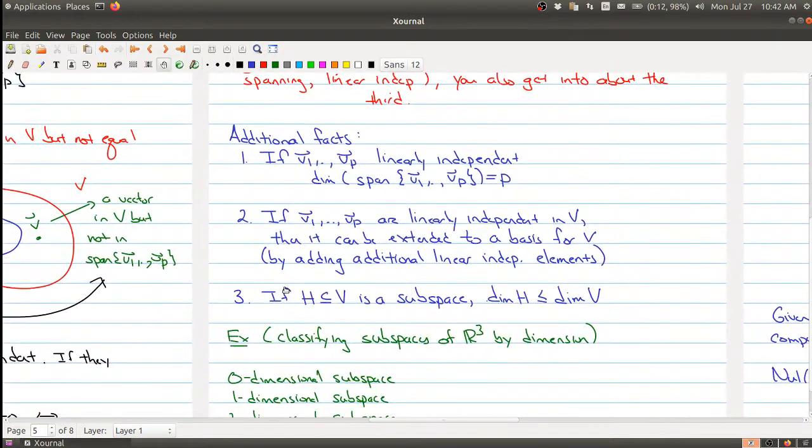And the third one is somewhat obvious: if you have a subspace of a bigger space, then the dimension of the subspace should be smaller than the dimension of the space it's contained in. So subspaces are what we would think of as smaller and that information is captured in the dimension.